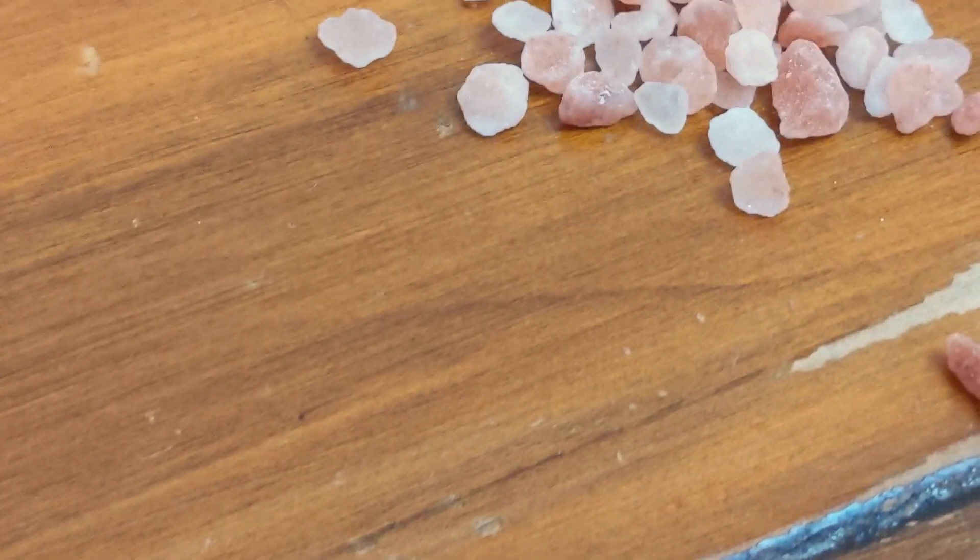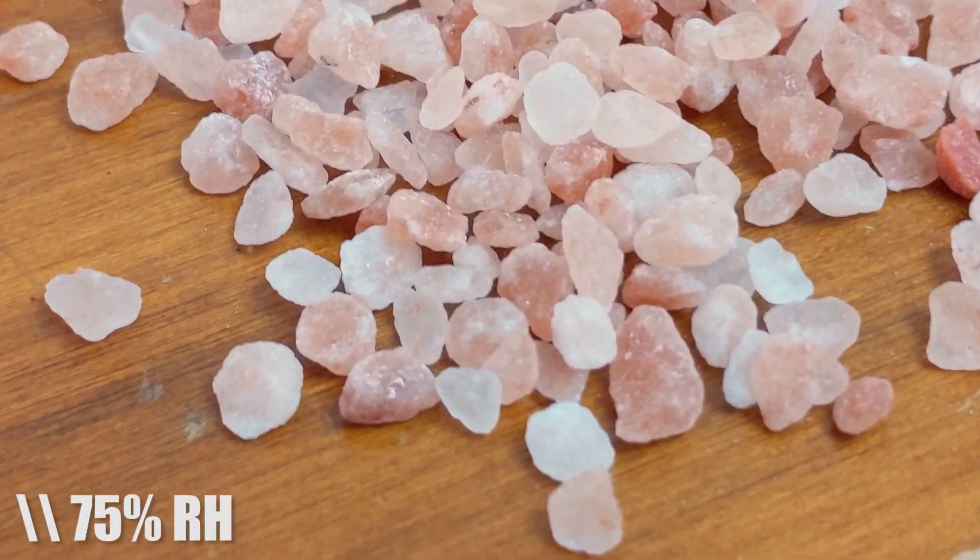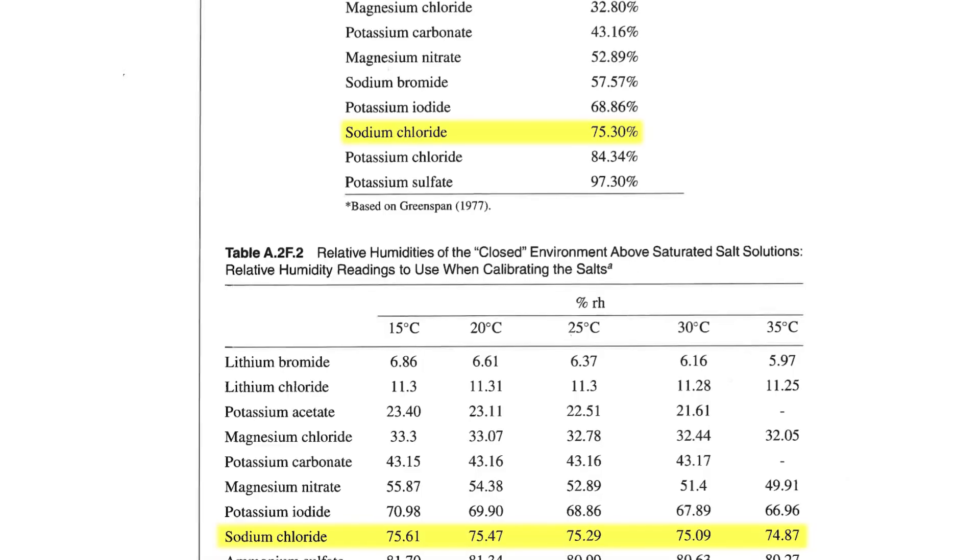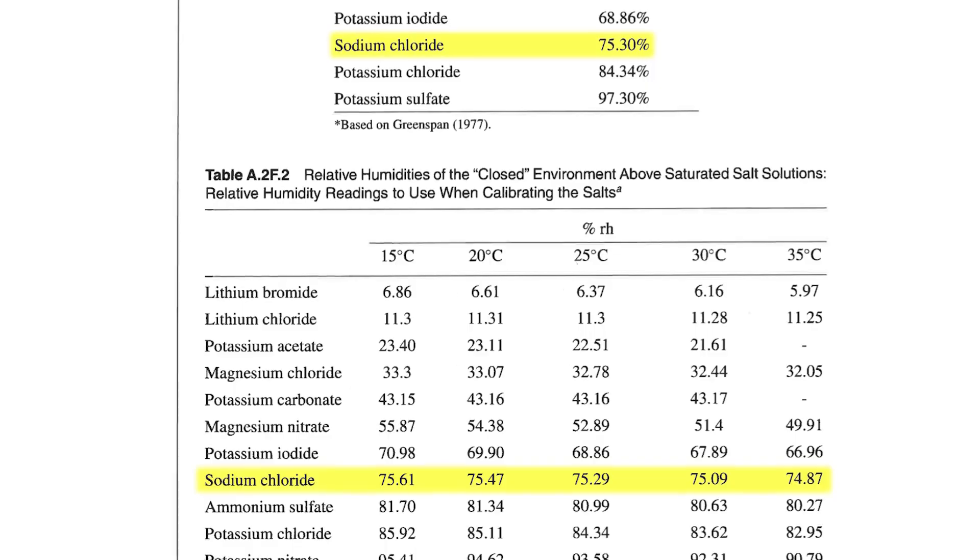The basic idea is that in an enclosed environment with a steady temperature, salt water will continue to release water vapor until the humidity reaches 75%, 75.4% depends what study you're looking at.